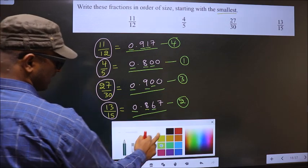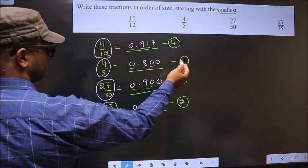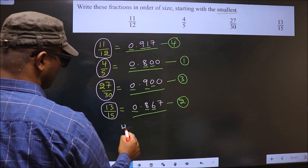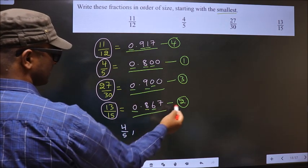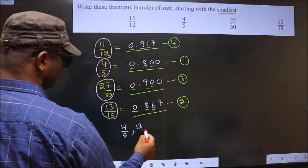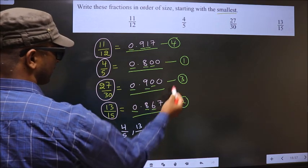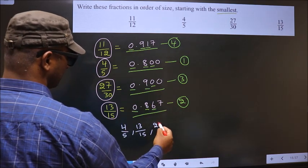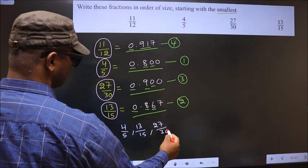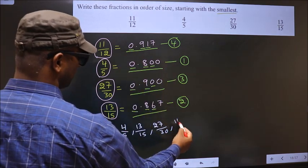So our answer is in first position 4 by 5, second position 13 by 15, third position 27 by 30, fourth position 11 by 12.